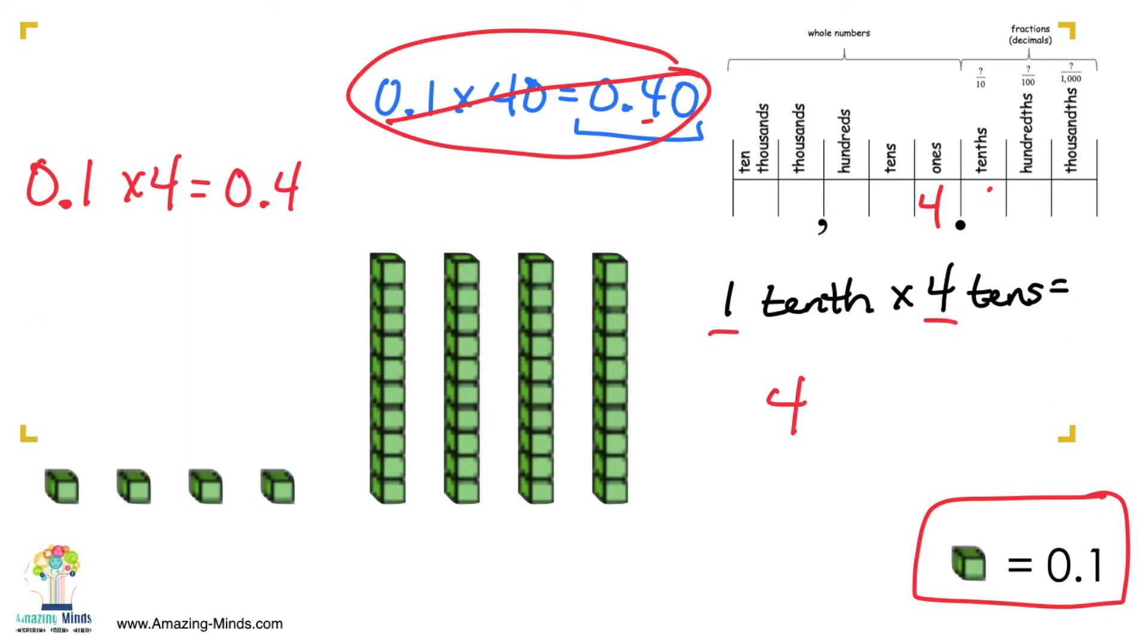Well, 1 tenth times 10 is 1. So you actually have 4 ones. So that is a very brief example, and I hope that's helpful.